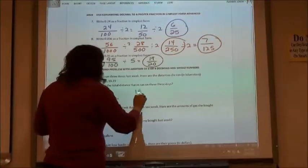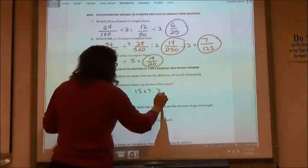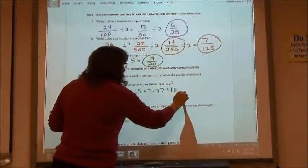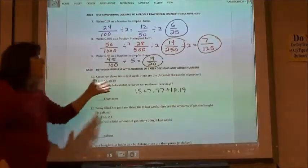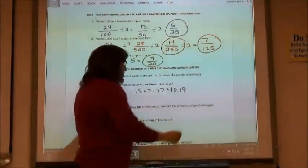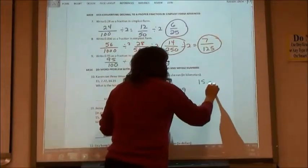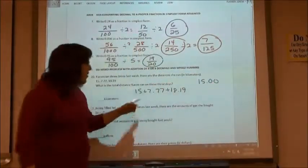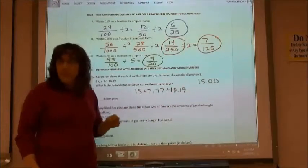So you're going to do 15 plus 7.77 plus 18.19. If you have to do that without your calculator, you would want to line the decimals up. So you'd probably really want to write it as 15.00, so it has the same number of decimals as the other ones.